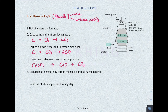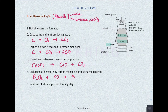This is followed by the reduction of hematite by carbon monoxide, producing molten iron. The hematite Fe2O3 gets reduced by the carbon monoxide produced in step three: Fe2O3 + 3CO → 2Fe + 3CO2. Always make sure the chemical equation is balanced.